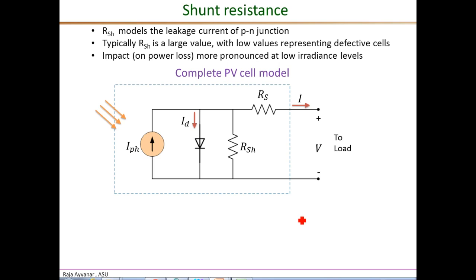The complete PV cell model for the purposes of all our applications, analysis, and design is shown here. That's the circuit representation. It has the irradiance-dependent photon current, the diode current, the series resistance, and now finally the shunt resistance.